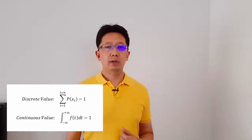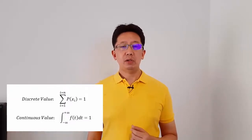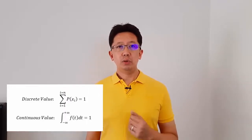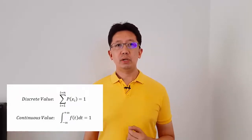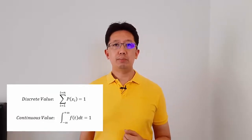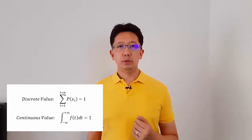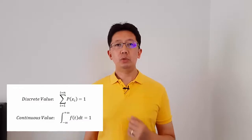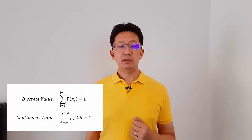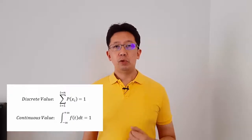Why is the random event important? The random event or random variable is related to the probability density function (PDF), the probability of getting a value, and further to the cumulative distribution function (CDF). In reliability engineering, the basic mathematical property of probability is that the summation of all probabilities — sigma of all probabilities — shall equal 1 for discrete values, and for continuous values, the integral of all probability density functions shall also equal 1, as per the equation shown.